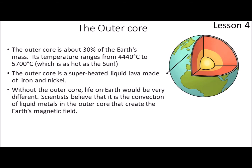Deeper into the earth we have the outer core, which is about 30% of the earth's mass. Temperature ranges from about 4,440 degrees Celsius to 5,700, which is as hot as the sun. The outer core is a superheated liquid lava made of iron and nickel. Without the outer core, life on earth would be different. Scientists believe that the convection of liquid metals — meaning the movement due to temperature of these liquid metals — in the outer core creates the earth's magnetic field, and that's how we get amazing things like the northern lights.